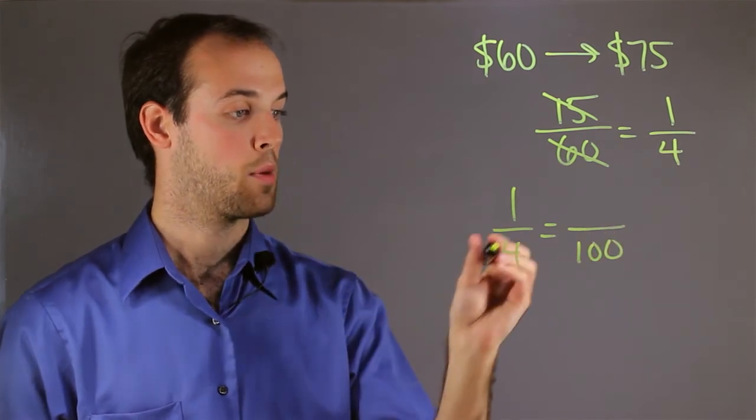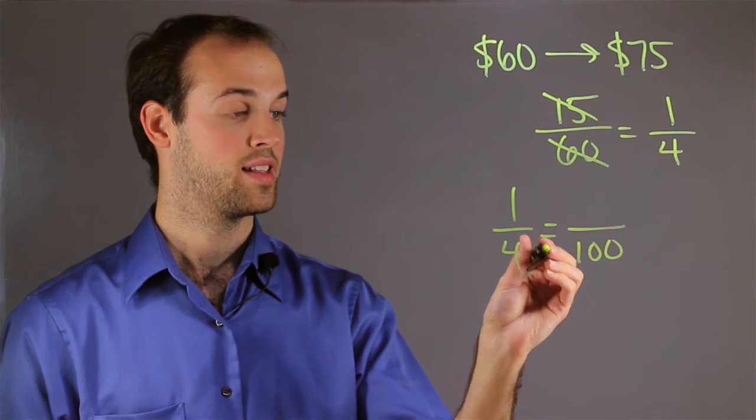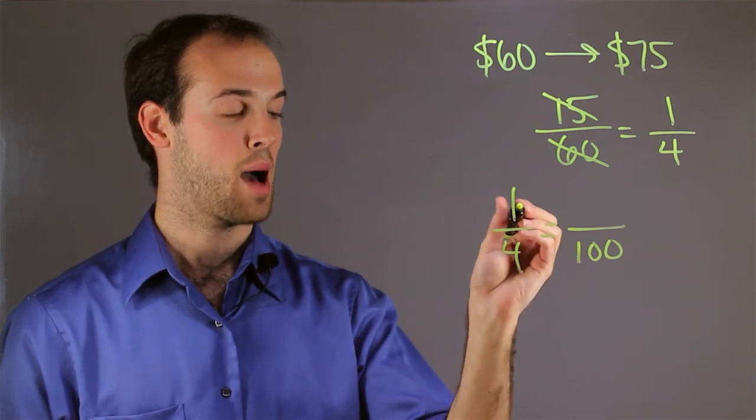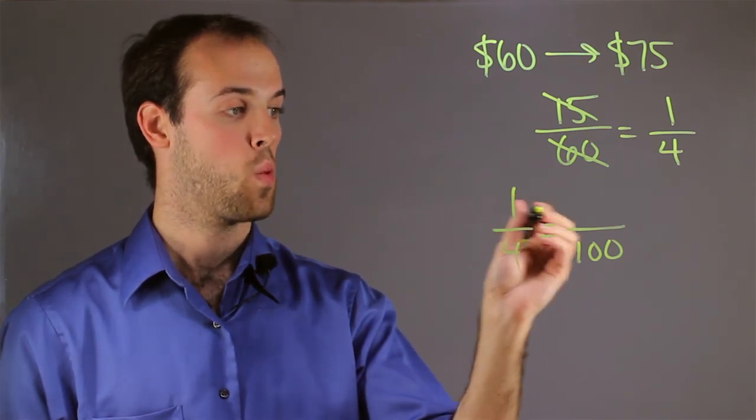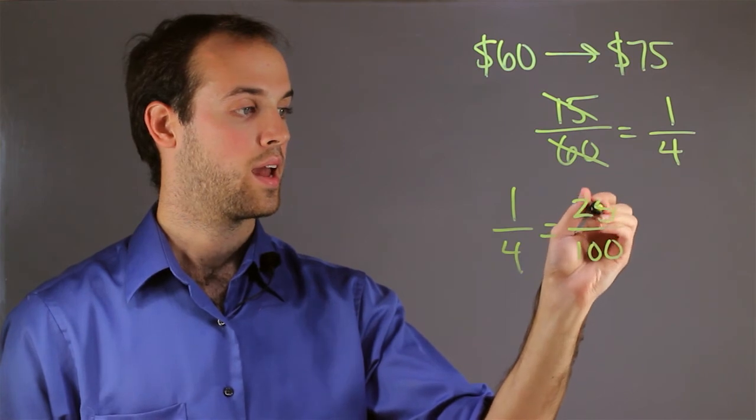Well, since I multiply 4 by 25 to get to 100, that means I need to do the same thing on top. So I multiply 25 by 1, and I get 25.